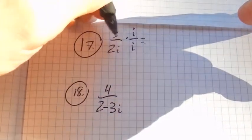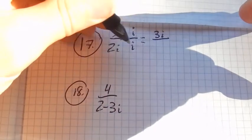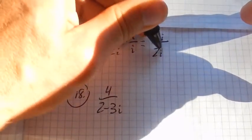Because, notice what it does up top, I have 3 times i, 3i. In the bottom, I have 2 times i times i, 2i squared.